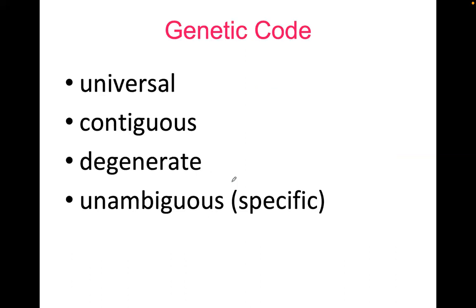Properties of the genetic code: it is universal, contiguous, degenerate, and unambiguous (specific). The genetic code is redundant — the concept of degeneracy — meaning a single amino acid may be coded for by more than one codon.